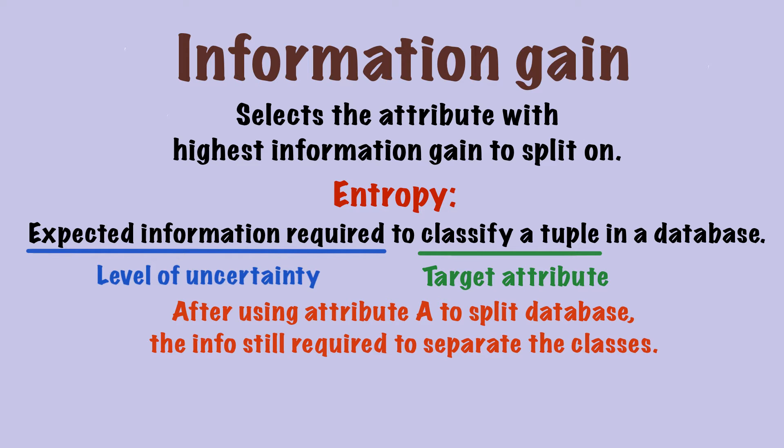However, to calculate the information gain of individual attributes, we need to know the information required to separate the classes after splitting on attribute A. In other words, we need to know the entropy of individual attributes. The formula goes like this. For attribute A, the entropy is the summation of the length of dj divided by the length of d times the entropy of dj.